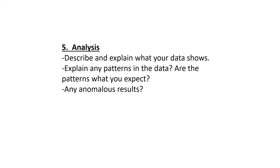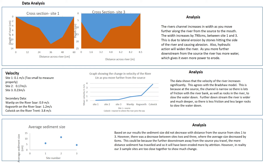Once you've presented the data clearly, the analysis is where you explain the patterns in your data and pick out any anomalous results. We learned from our data that the river channel does increase in width as you move further from the source to the mouth. Our data showed the width increased by 790 centimeters from site one to site three. This was due to lateral erosion — stones hitting the side of the river causing abrasion — and hydraulic action widening the river. Further downstream the river carries more water, giving it more power to erode and hence it gets wider.